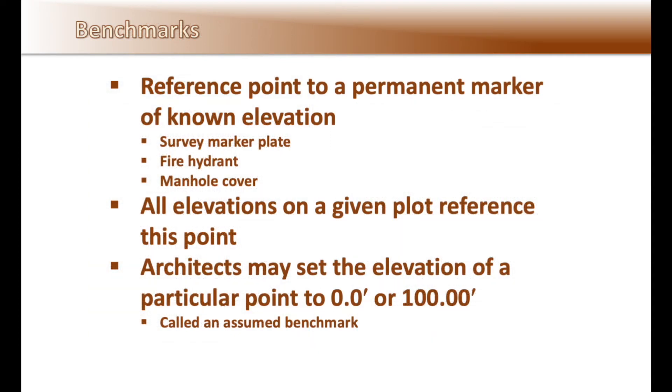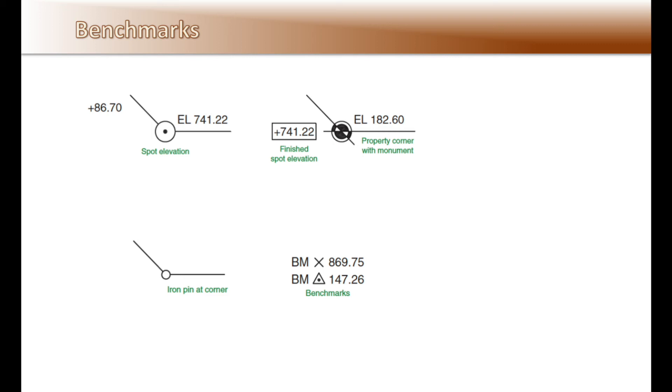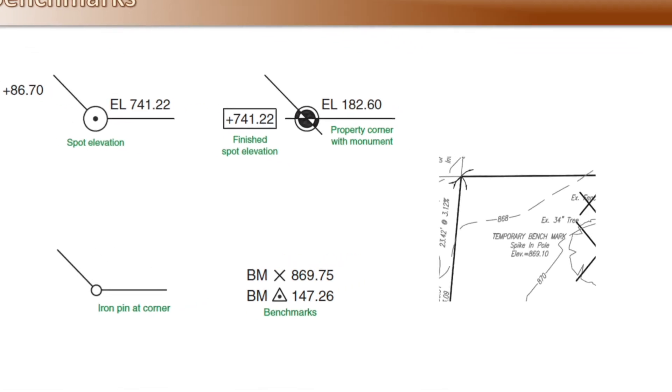And now on benchmarks. In surveying, a benchmark is a known elevation on a post, fire hydrant, manhole cover, or any other permanent marker that is used as a basis for measuring the elevation of other topographical or building elevation points. All elevations on a given plot or site plan reference this point. Architects typically set building first floor elevations as a reference to both the actual site elevation and referenced floor plan elevations such as 0.0 feet or 100.00 feet. This would be called an assumed benchmark or building elevation, which makes it easier to reference future building elevations and reference points.